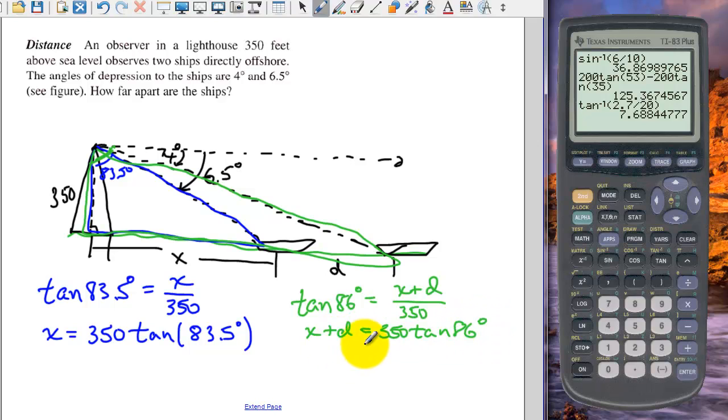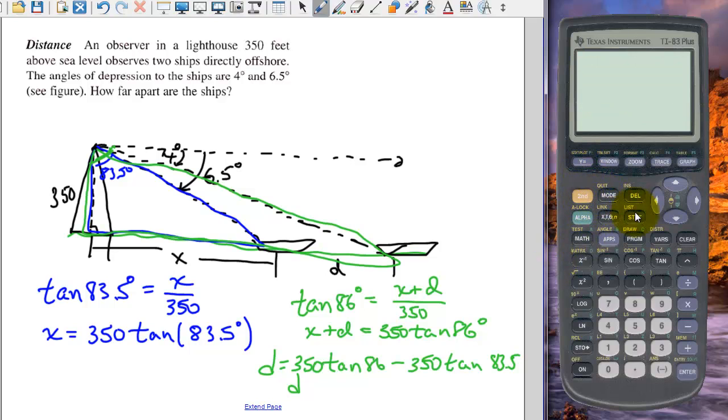And we're going to subtract the x. So d is going to be 350. And we could use our, let's just, let me not factor this here, 86 minus our x, which we calculated over there in blue.